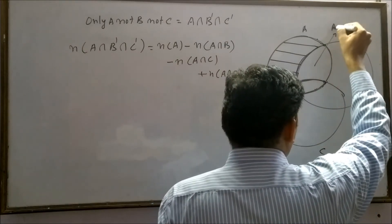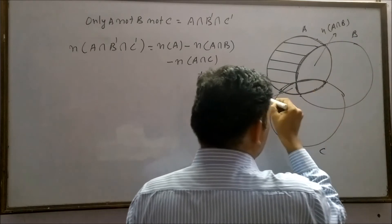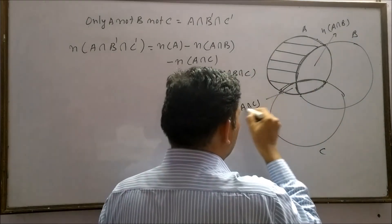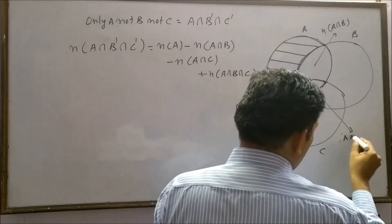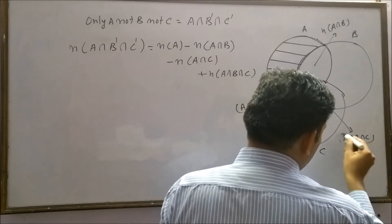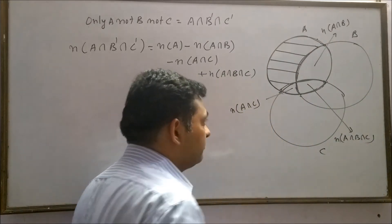This is our A intersection B, and this is our A intersection C, and this part is our A intersection B intersection C. Write cardinal number also here.